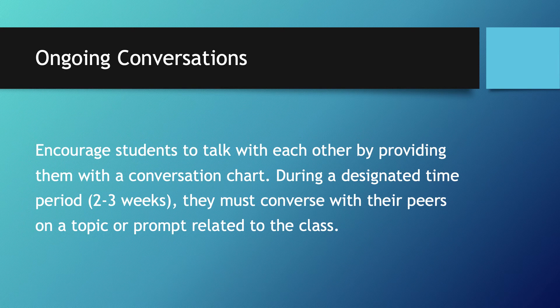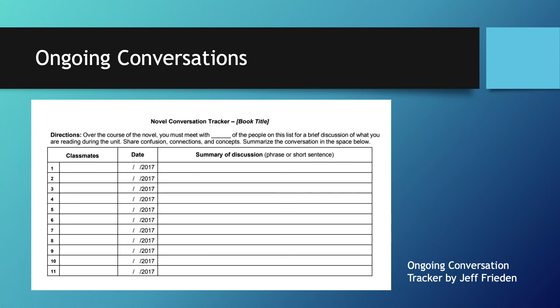With ongoing conversations, you encourage students to talk with each other by giving each student a conversation tracker — a chart where they keep track of conversations they've had with other students. Students must have conversations with a minimum number of peers, say about 75%, over a predetermined period of about two to three weeks. These can be structured around topic prompts. On their tracker, students record the name of the person they talked to, the date, and a one-line summary of the conversation. Once a pair has talked, they may not return to each other until reaching the minimum number of unique conversations set by the teacher. There's an image of what this tracker looks like on the Cult of Pedagogy website.